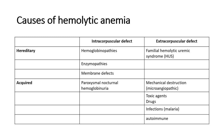Other hereditary causes include familial hemolytic uremic syndrome. For acquired causes, an intracorpuscular defect includes paroxysmal nocturnal hemoglobinuria. For extracorpuscular defects, there is microangiopathic hemolytic anemia, where there is mechanical damage to the red blood cells causing intravascular hemolysis and formation of schistocytes. It can also be due to toxic agents or drugs, infections such as malaria, and autoimmune diseases such as autoimmune hemolytic anemia (AIHA).